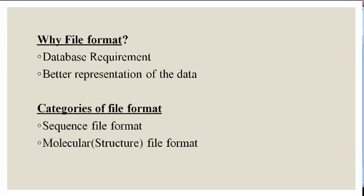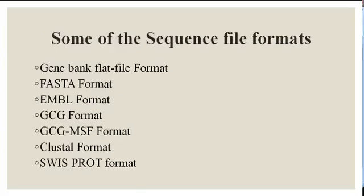File formats are divided into two categories. The first is sequence file format, in which DNA sequences or protein sequences are saved. The second category is molecular file format, also known as structure file format, in which structural information is saved. We will be dealing with only two types of sequence file formats that are majorly used worldwide: GenBank format and FASTA format.